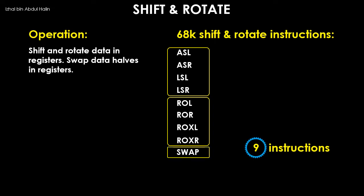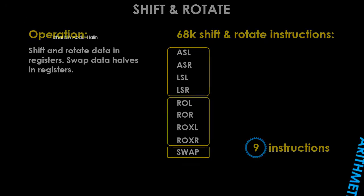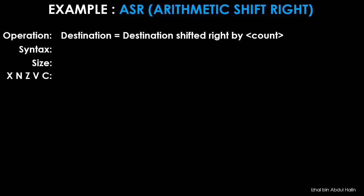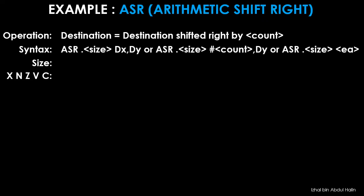The first example is the ASR instruction, used to arithmetic shift right data in an operand. The number of times that the data is shifted can be specified by the programmer in a variable count in the instruction. Data is shifted one bit at a time until the number of shifts equals the specified count. The general syntax shows that three variants are available for the programmer to use. The operand size is byte, word, and long word. All of the status registers are affected after execution of the ASR instruction.